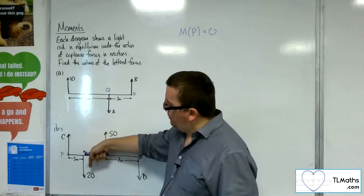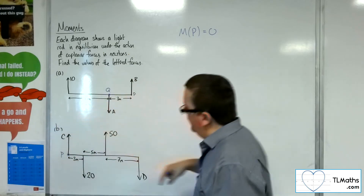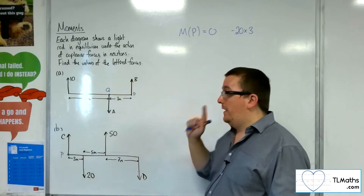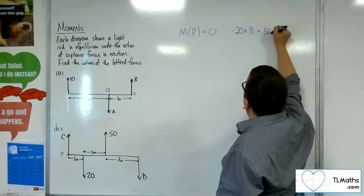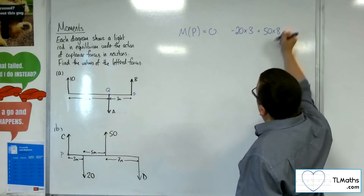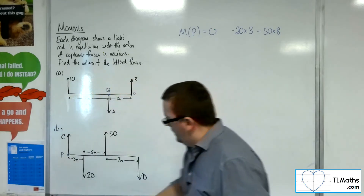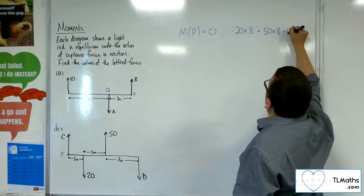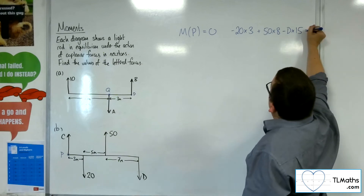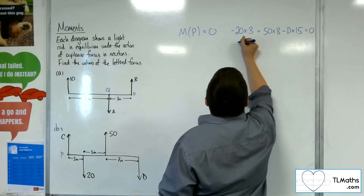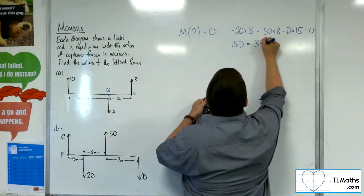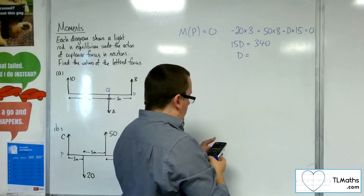Taking moments about P: the 20-newton force is clockwise, so minus 20 times its distance, which is 3. The 50-newton force is anticlockwise, so plus 50 times its distance from P — make sure you use 3 plus 5, which is 8, not just 5. Then D is clockwise, so minus D times its distance, which is 7 plus 5 plus 3, so 15. Setting this equal to zero: 15D equals 50 times 8 minus 20 times 3, which is 340. So D equals 340 divided by 15, which is 68 over 3.